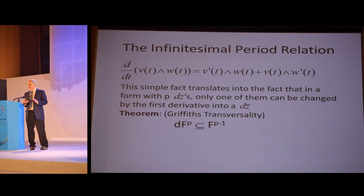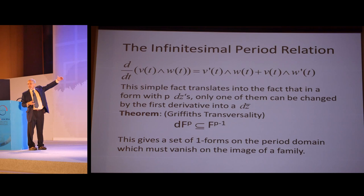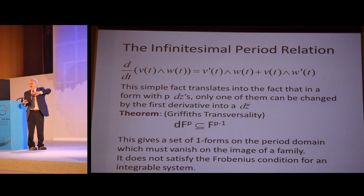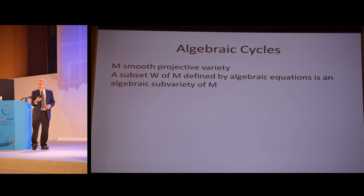This simple fact turns out to say that if you have p dz's, you can only lose one with the first derivative. This became what's known as the infinitesimal period relation or Griffiths transversality, that the derivative of this space F^p not only varies holomorphically, but to first order it lands in F^(p-1), the space one, the next space up. Chern never called Chern classes Chern classes. He always called them characteristic classes. Philip has never called this Griffiths transversality. This gives you a set of one-forms on the period domain which has to vanish if you have a family of varieties. There's this nice condition, the Frobenius condition for when you get a nice foliation from these one-forms. It doesn't satisfy this. Instead, it's something called an exterior differential system. This is where Philip got interested in exterior differential systems.